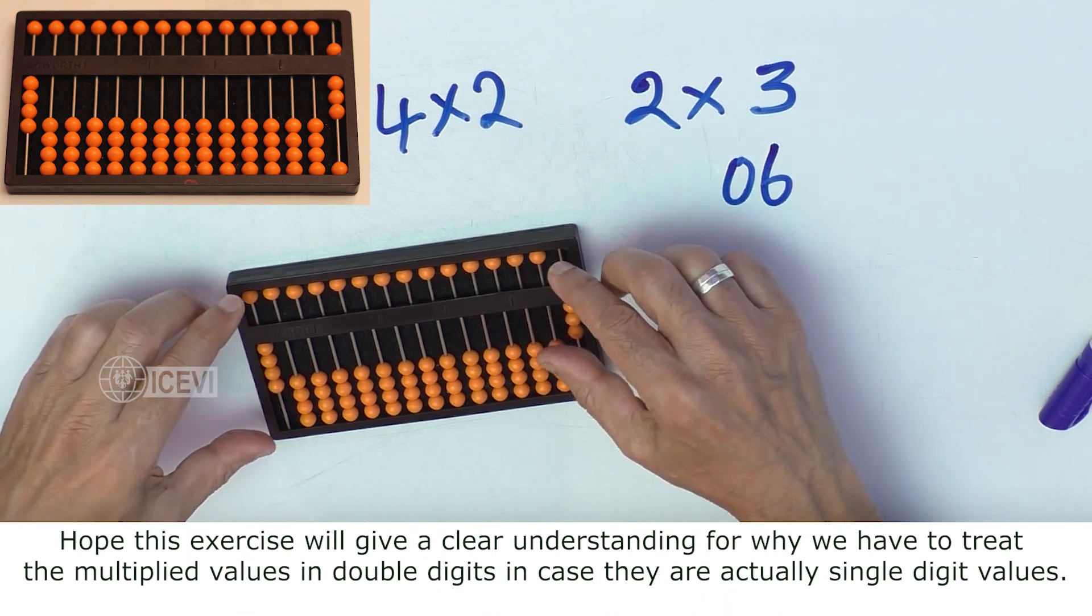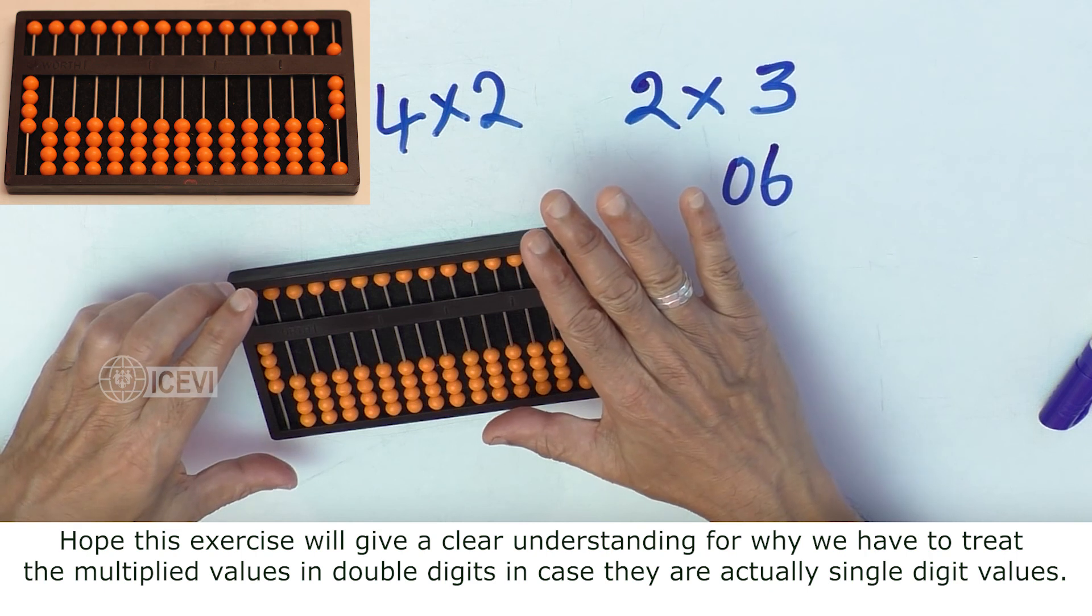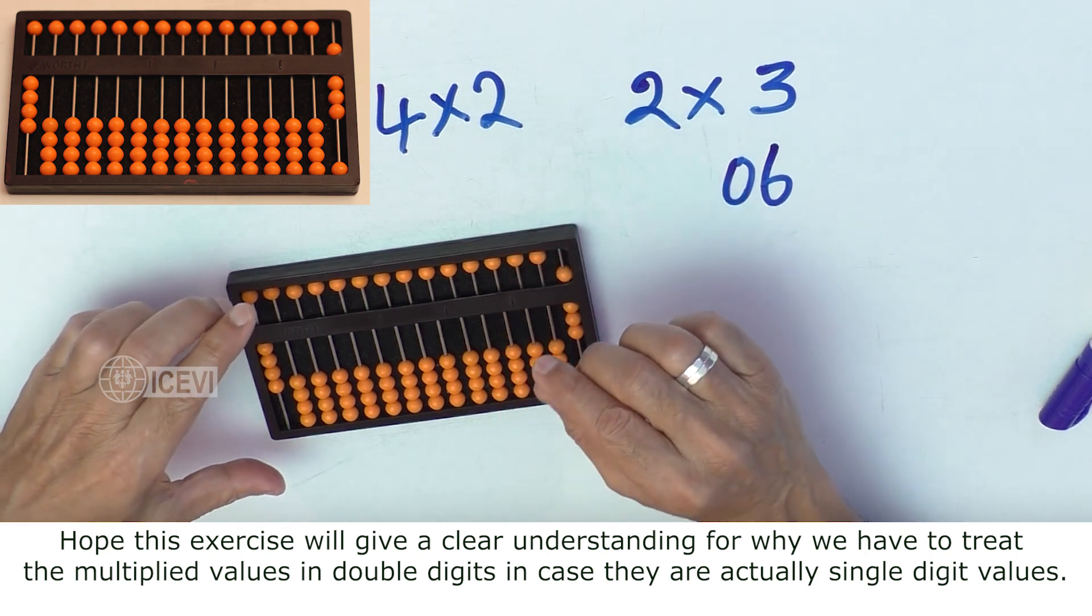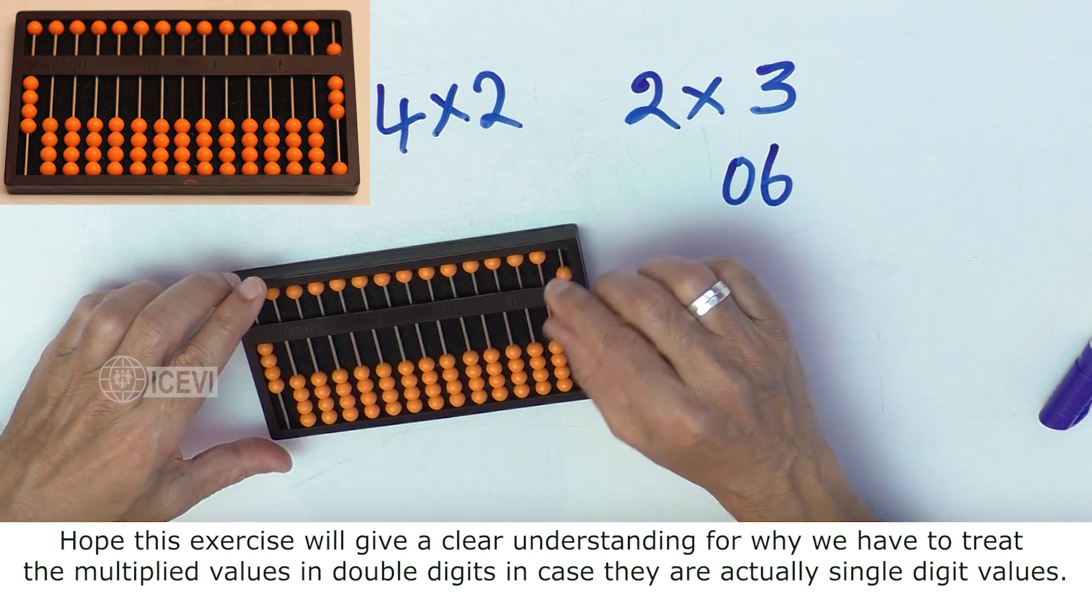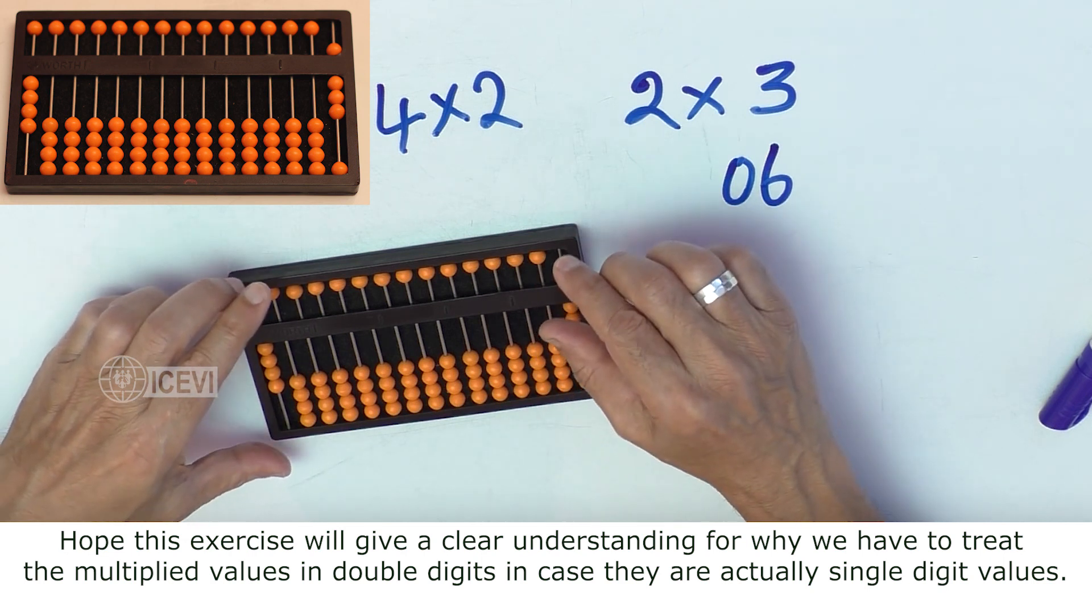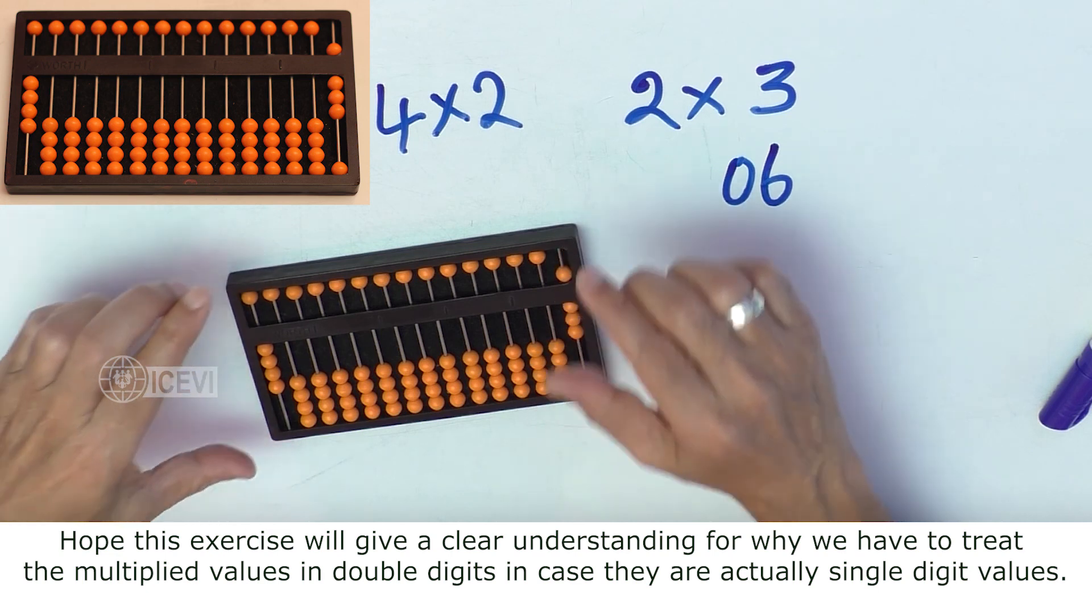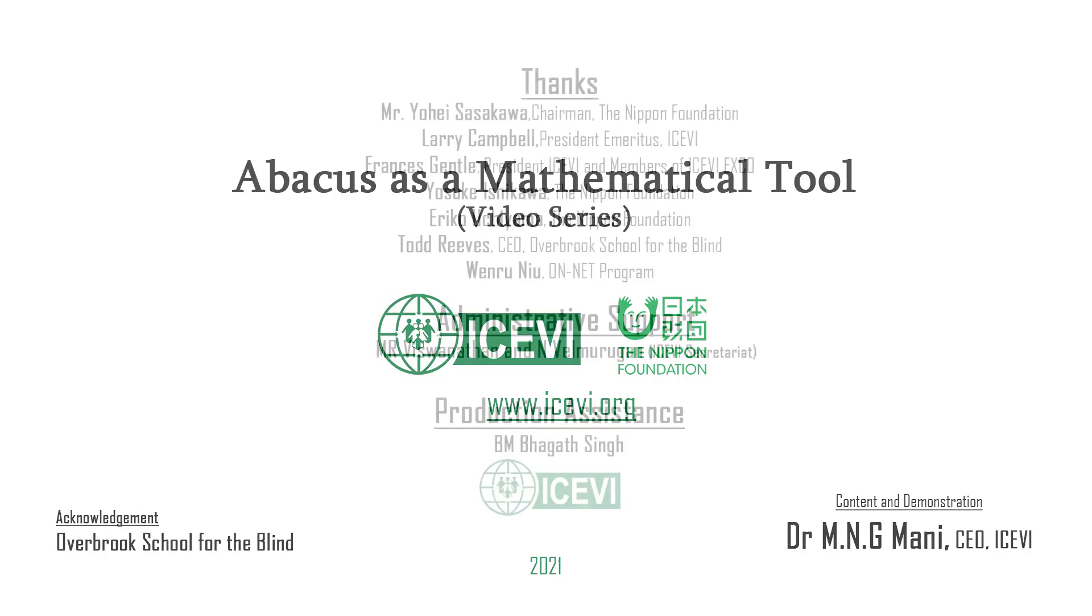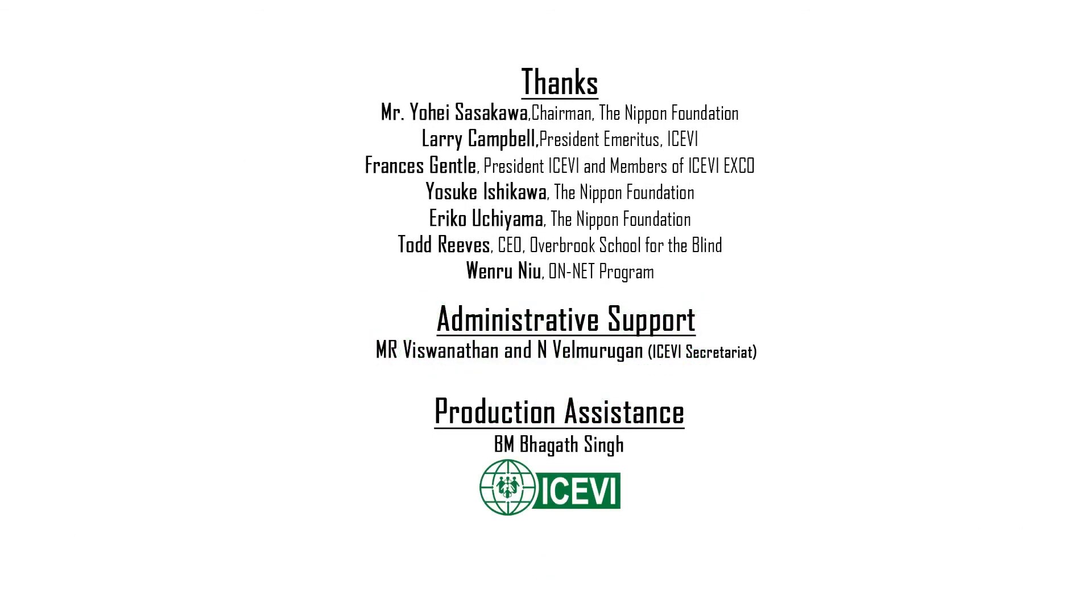Hope this exercise will give a clear understanding for why we have to treat the multiplied values in double digits, in case they are actually single-digit values. Adios!